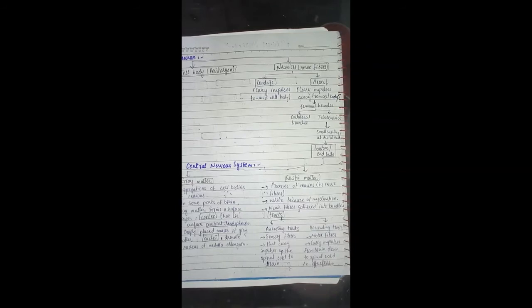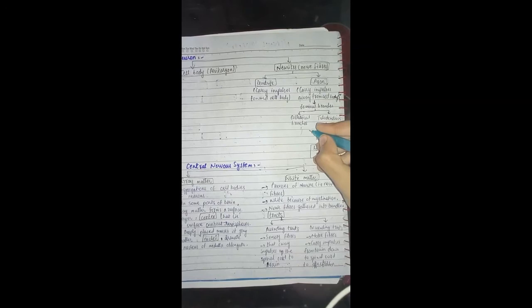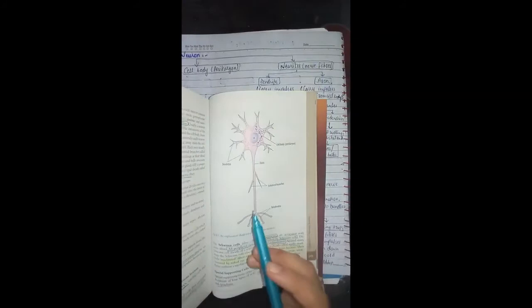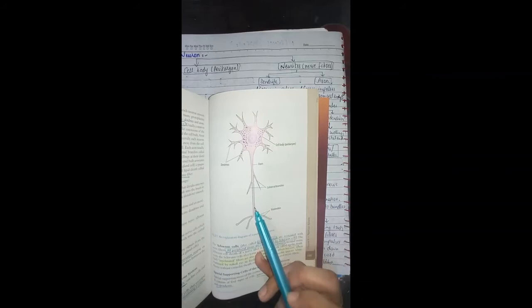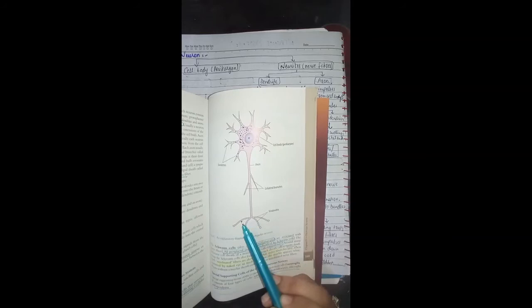The cell body contains very important components such as mitochondria and Golgi apparatus — nutritious components that maintain the neuron's life so it can perform its functions. The axon has collateral branches — lateral branches — and at the end there are telodendrites. Where the axon ends, there is a small swelling called end buttons or end bulbs.